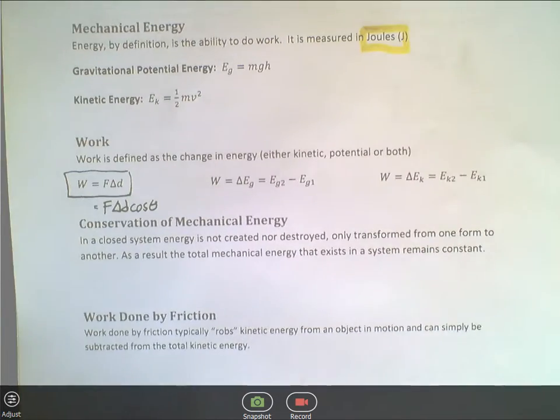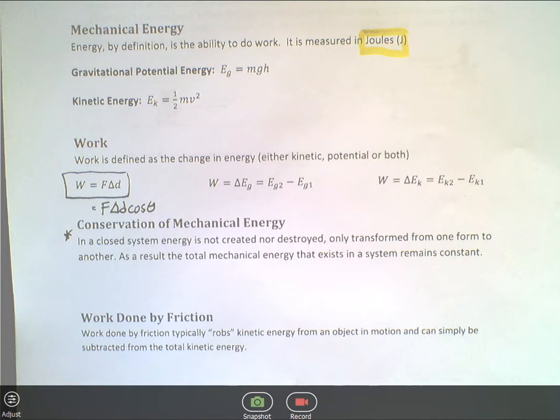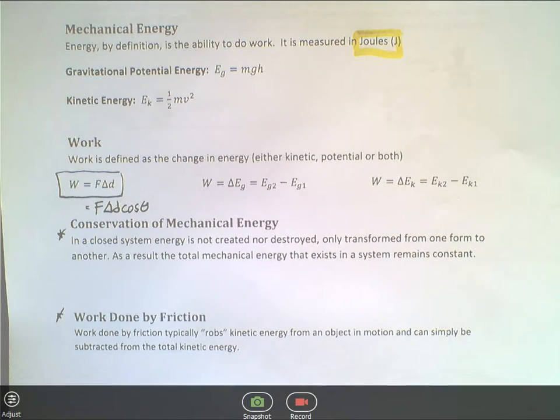Conservation of mechanical energy is going to become extremely important in these questions. In a closed system, energy is not created nor destroyed. It's simply transformed from one form to another. As a result, the total mechanical energy that exists in the system remains constant. Another thing I wanted to point out is work done by friction. Work done by friction typically robs kinetic energy from an object in motion and can simply be subtracted from the total kinetic energy.